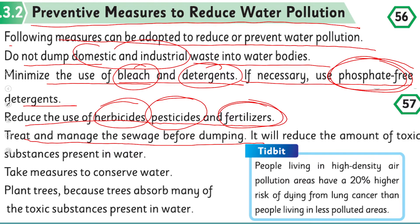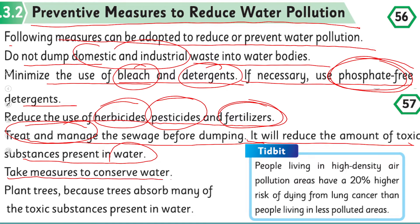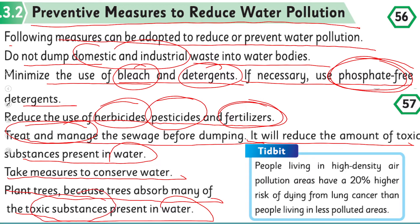Treat and manage the sewage before dumping — jitna abhi sewage aur ganda paani jo hai usko dump karne se pehle saaf paani mein usko manage aur treat kar lena chahiye. It will reduce the amount of toxic substances present in water — isse jo hai toxicity jo hai wo kam ho jayegi. Make measures to conserve water — paani ko mehfooz karne ke hume tarike sochne chahiye. Plant trees, because trees absorb many of the toxic substances present in water — darakht zyada se zyada lagayen ki darakht har tarah ki pollution ko kam karte hain.